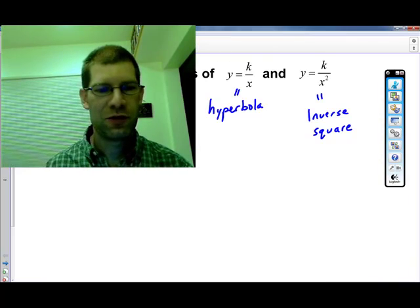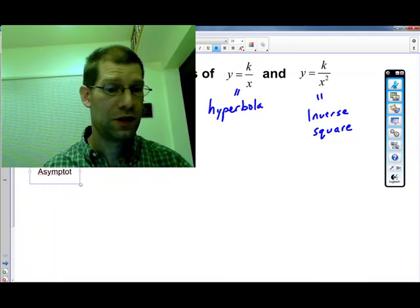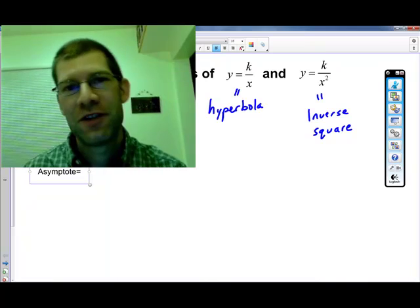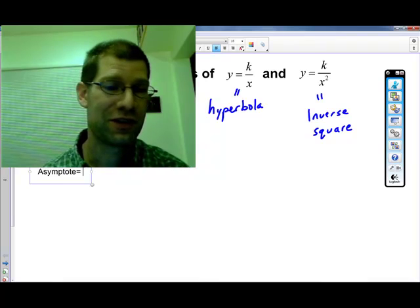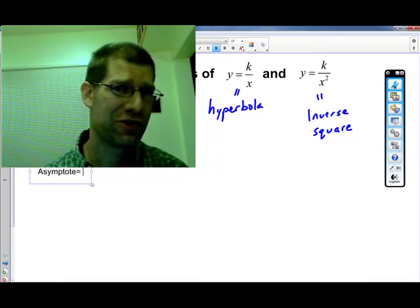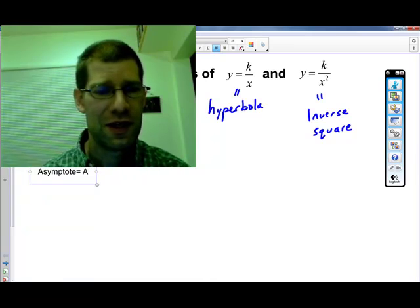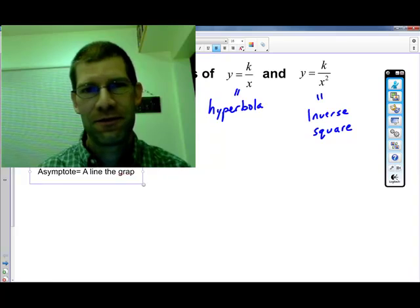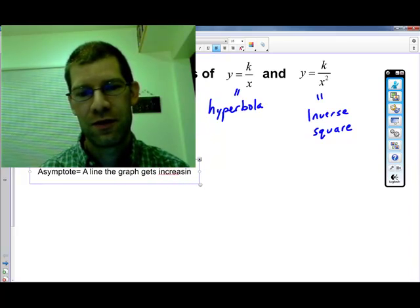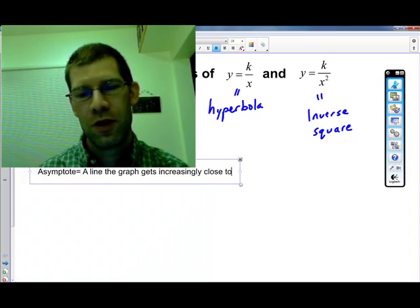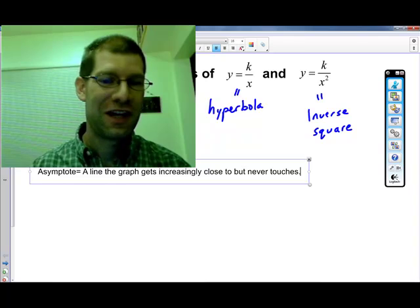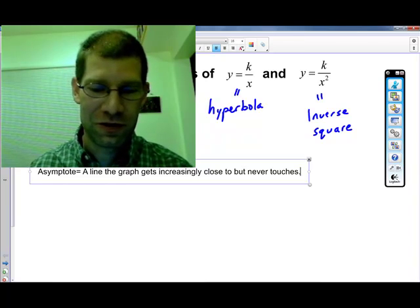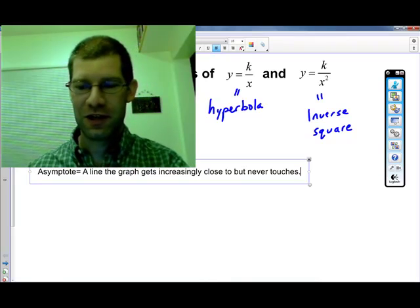All right, so to define an asymptote, the official definition is, it's a line the graph gets increasingly close to, or closer and closer to, but never touches. So asymptote, you may want to try squeezing this on your chart, or you could write it in some notes. A line the graph gets increasingly close to, but never touches. First time trying to type while taking a video. Another thing you could say though, instead of that increasingly close, it would be closer and closer to.